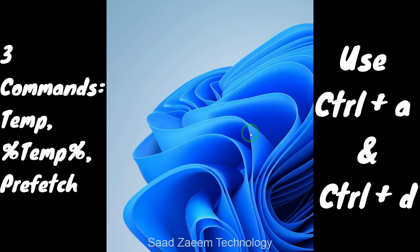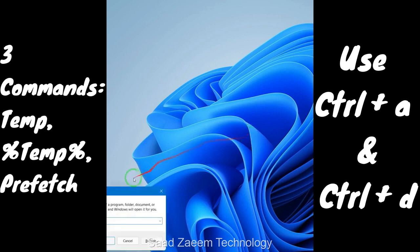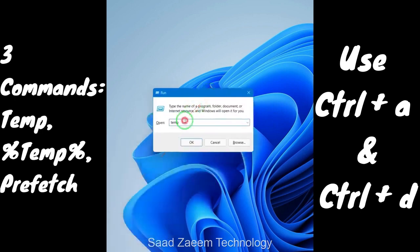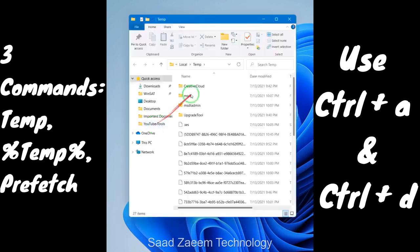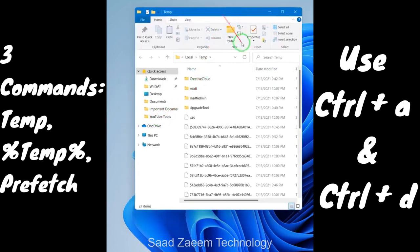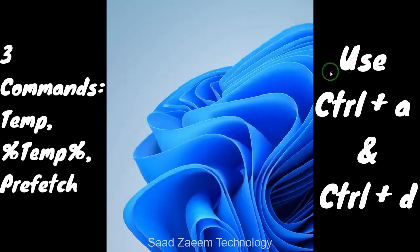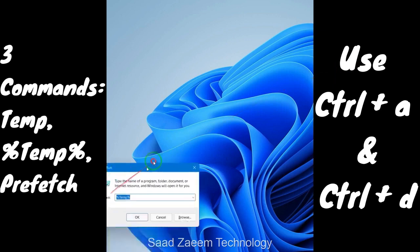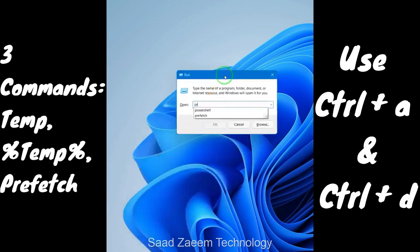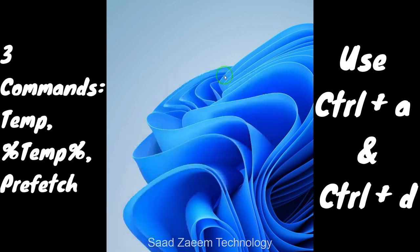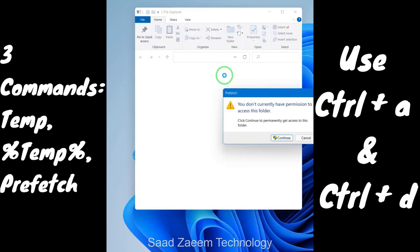After deleting those files, you have to repeat the same procedure with two other commands. Click on Windows key and R, then type in '%temp%' and hit Enter. Then press Ctrl+A and Delete to delete them all. Repeat again and type in 'prefetch'.